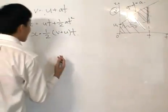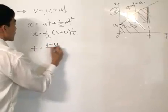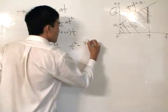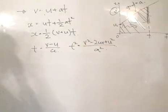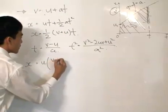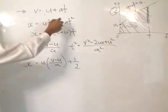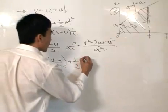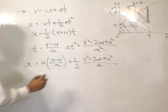Now let's eliminate time. From v = u + at, time t = (v − u)/a. And t² = (v² − 2uv + u²)/a². Substituting into x = ut + ½at², we get x = u(v − u)/a + ½ · (v² − 2uv + u²)/a.